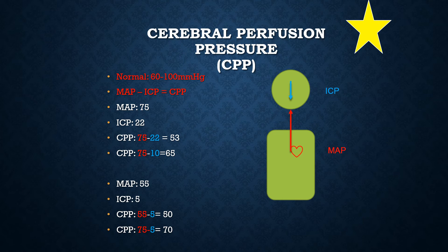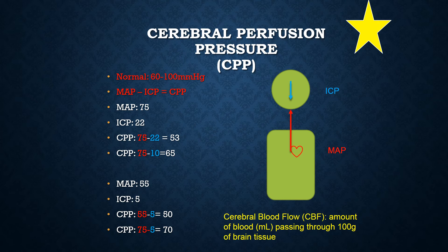Another common term you will hear in addition to CPP is CBF, or cerebral blood flow. Both CPP and CBF refer to perfusion of brain tissue, but CPP refers to the amount of pressure perfusing the brain, while CBF — cerebral blood flow — refers to the amount of blood passing through brain tissue. Specifically, the amount of blood in milliliters that passes through 100 grams of brain tissue. Either way, CPP and CBF are both referring to how well the brain is getting perfused.